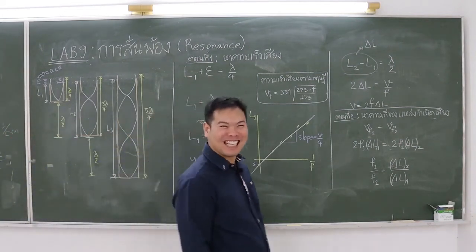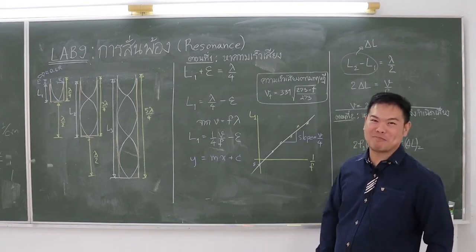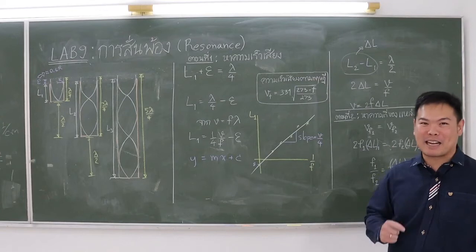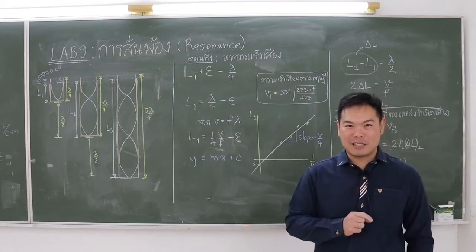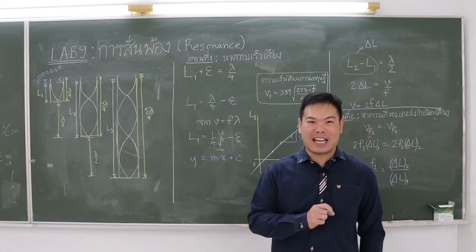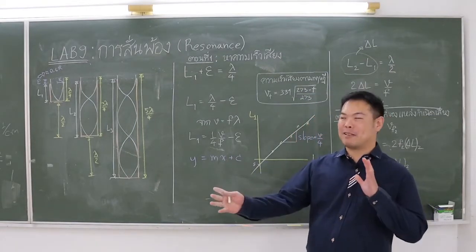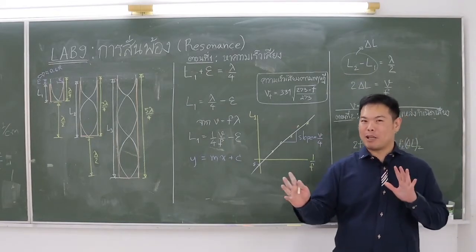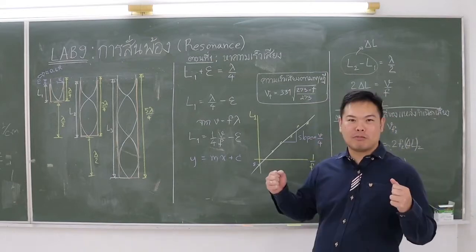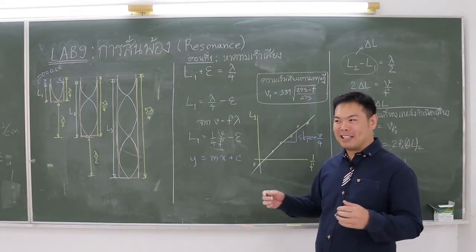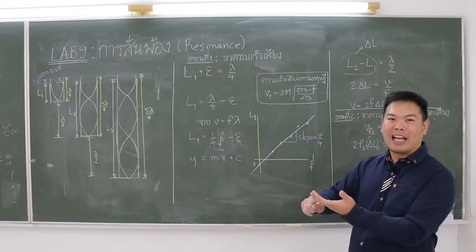Hello everyone, today we are going to do Lab 9, which is about resonance. Before getting to understand resonance, there is one concept that we need to know, and that is the concept of natural frequency. For all systems that oscillate, there has to be a natural frequency or natural frequencies of oscillation. When you let a swing swing without adding any force, the swing will have only one frequency — you cannot make it higher, you cannot make it lower — and that is the natural frequency of the swinging motion.